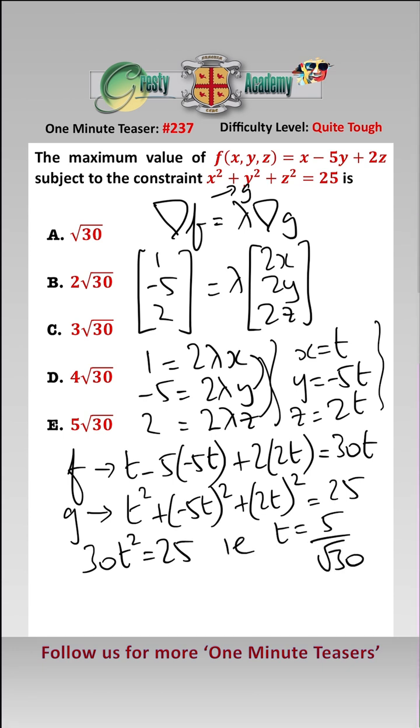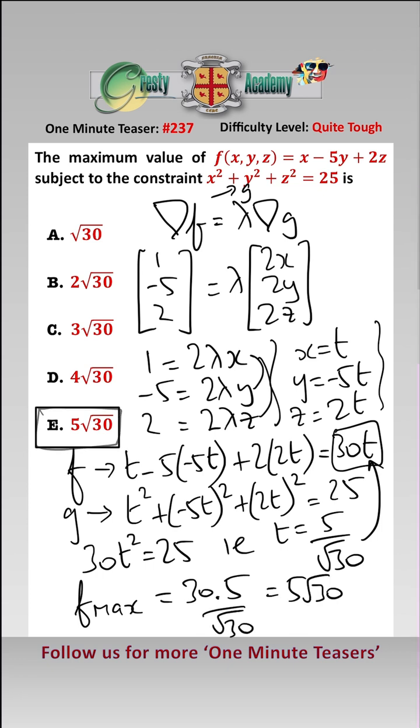And all we need to do now to find f max is plug that value in. f max therefore equals 30 times 5 over root 30, which is 5 root 30, which is answer E.